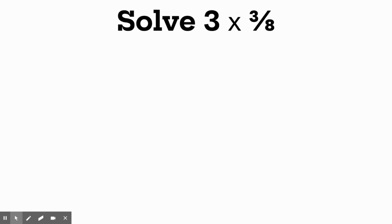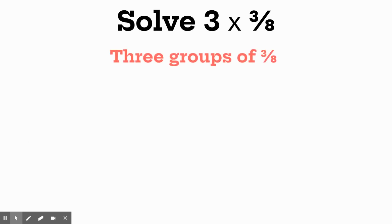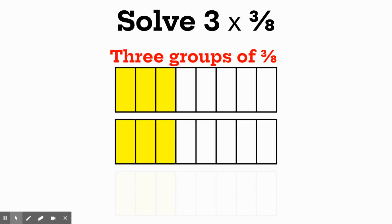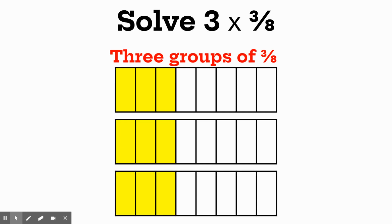Let's do another problem. This time we're going to do three times three eighths — think about it as groups. Three times three eighths is the same as three groups of three eighths. Here is one group of three eighths: there are eight total pieces in the whole and three of them are shaded, representing three eighths. There's a second group and a third group. To find the answer, we count up all the shaded eighths pieces — how many total eighths pieces are shaded. If you count them up, you get an answer of nine eighths.